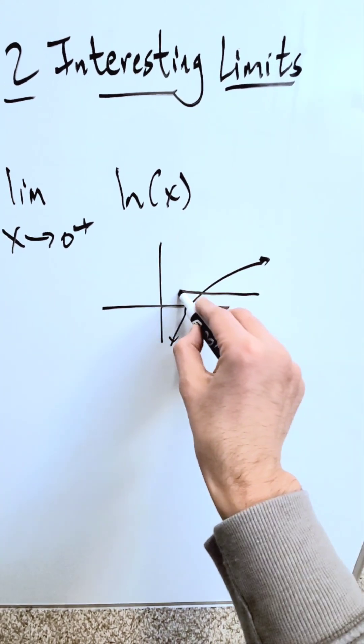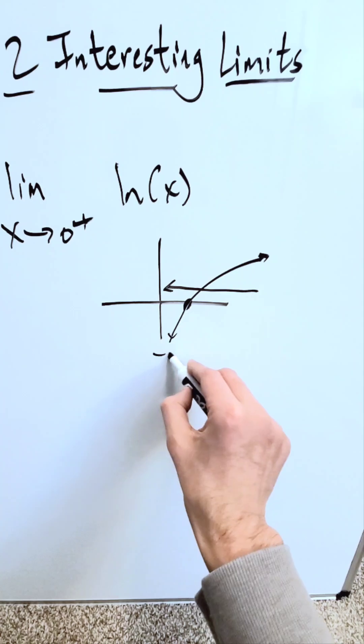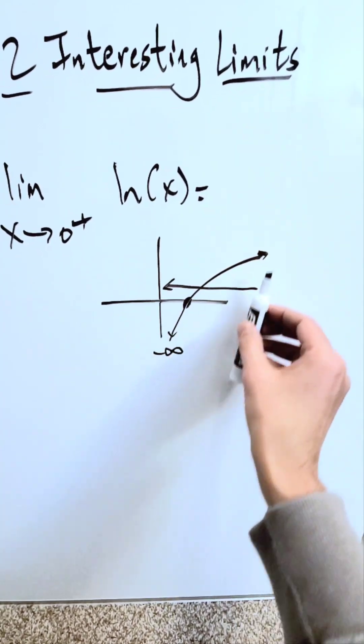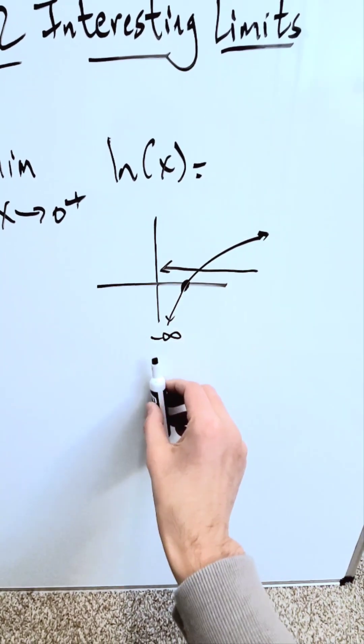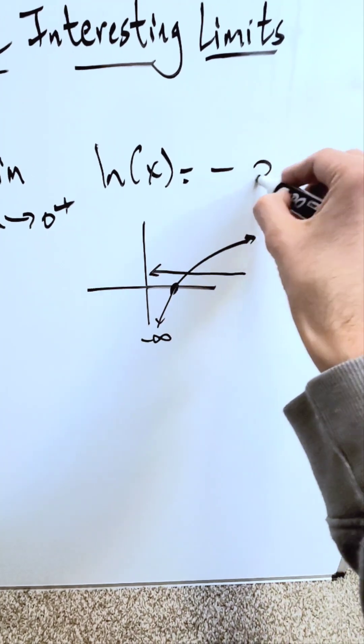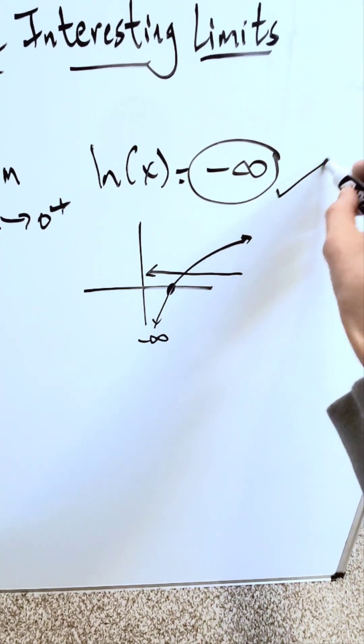As you approach 0 from the right for this function, it dips down towards minus infinity. The function becomes asymptotic with your y-axis dipping down towards minus infinity and that right there is your end result and it will be correct.